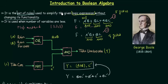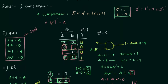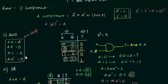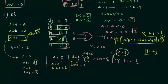In the last presentation we saw the introduction to Boolean algebra. We covered three rules: the complement rule, four rules for the AND operation (a AND a = a, a AND 0 = 0, a AND 1 = a, a AND a' = 0), and four rules for the OR operation (a OR a = a, a OR 0 = a, a OR 1 = 1, a OR a' = 1).